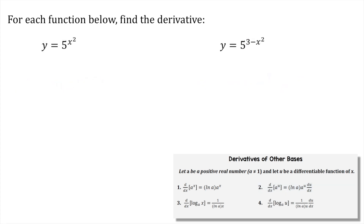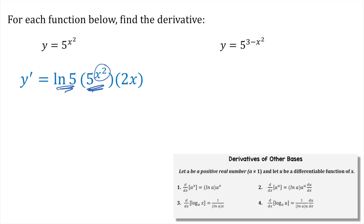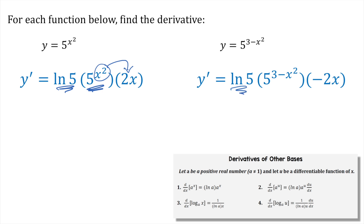Pause the video and give this first one a try: y equals 5 to the x squared. The answer is ln of the base, repeat the function, derivative of the exponent. Okay, try the next one: ln of the base, repeat the whole function, and then take the derivative of the exponent.